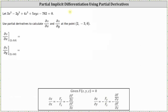To set this up, we will let F(x, y, z) equal three x cubed minus two y cubed plus four z cubed plus five xyz minus 762, set equal to zero.